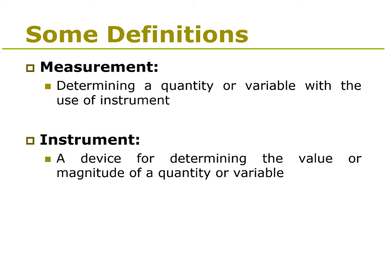Measurement is determining a quantity or variable with the help of an instrument, and the instrument is the device that helps us determine the value of whatever we are trying to measure. For example, if I want to measure a voltage at a particular point in my circuit, the quantity I am trying to measure is voltage, and I could place a voltmeter or use a digital multimeter — that is going to be the instrument.